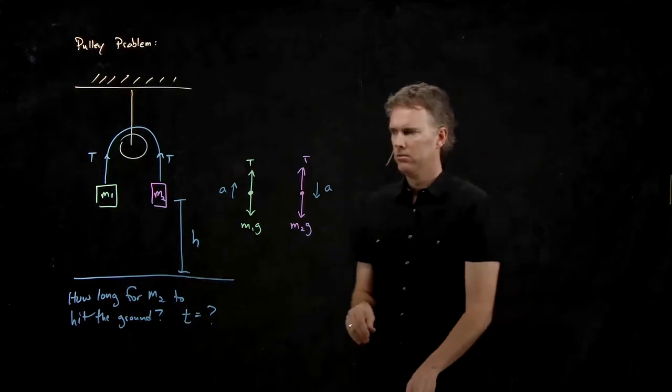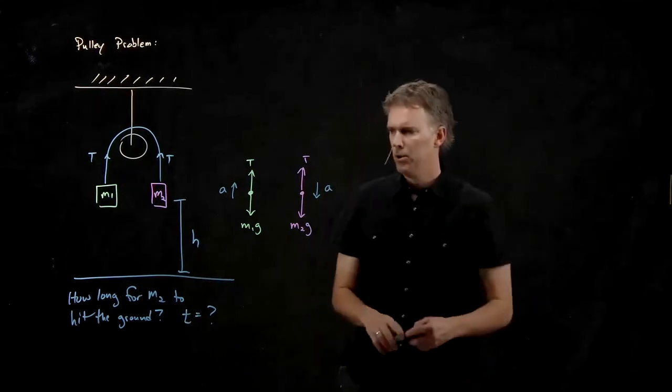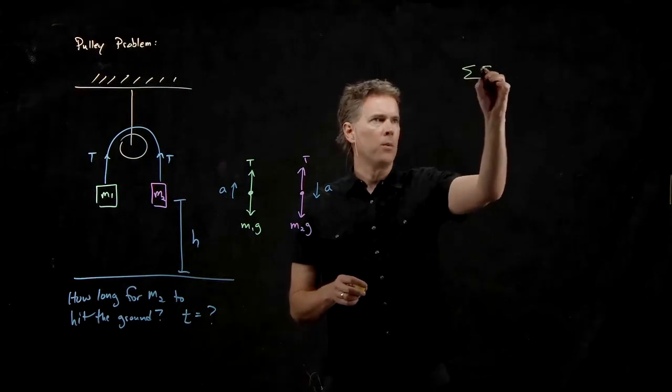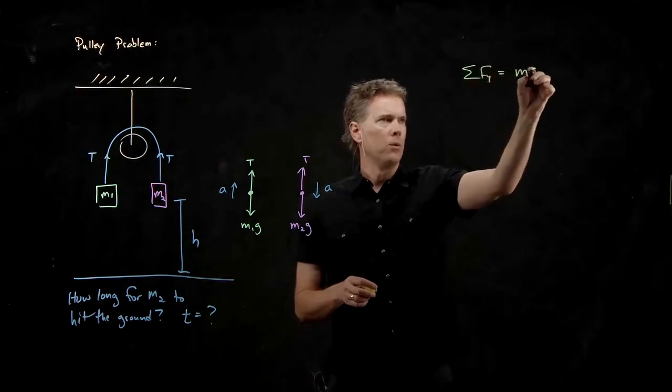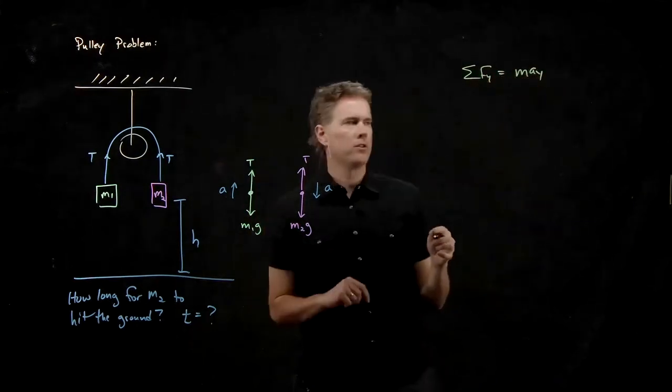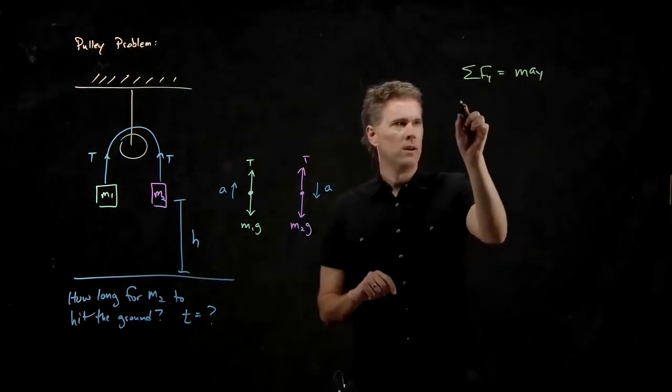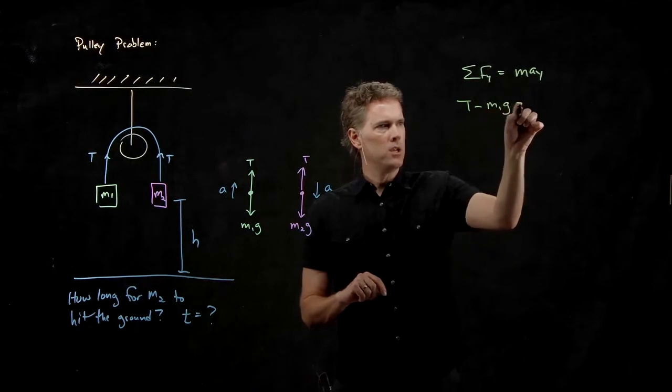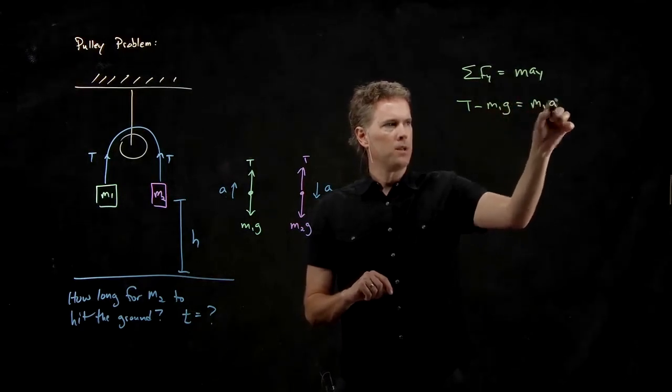So now we just go back to Newton's second law. We only have to worry about the y-direction. So we have sum of the forces in the y-direction for M1. We get T minus M1g equals M1 times A.